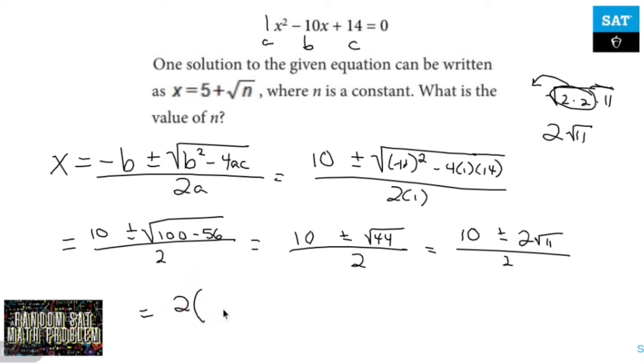So I have 2 parentheses, 5 positive or negative. That 2 is now gone if I factor it out, square root of 11 over 2. These 2s cross each other out. You're left with 5 plus or minus the square root of 11.